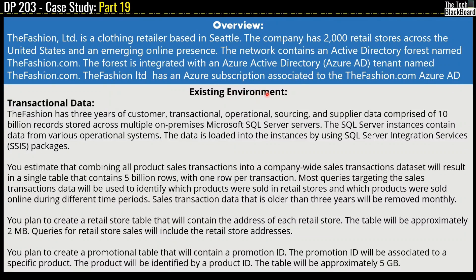Moving on to the existing environment detail, starting with transactional data. Fashion has three years of customer, transactional, operational, sourcing, and supplier data comprised of 10 billion records stored across multiple on-premises Microsoft SQL servers. The data is loaded into the instances using SQL Server Integration Services (SSIS). Combining all product sales transactions into a company-wide dataset will result in a single table containing 5 billion rows, one row per transaction. Sales transaction data older than 3 years will be removed monthly.